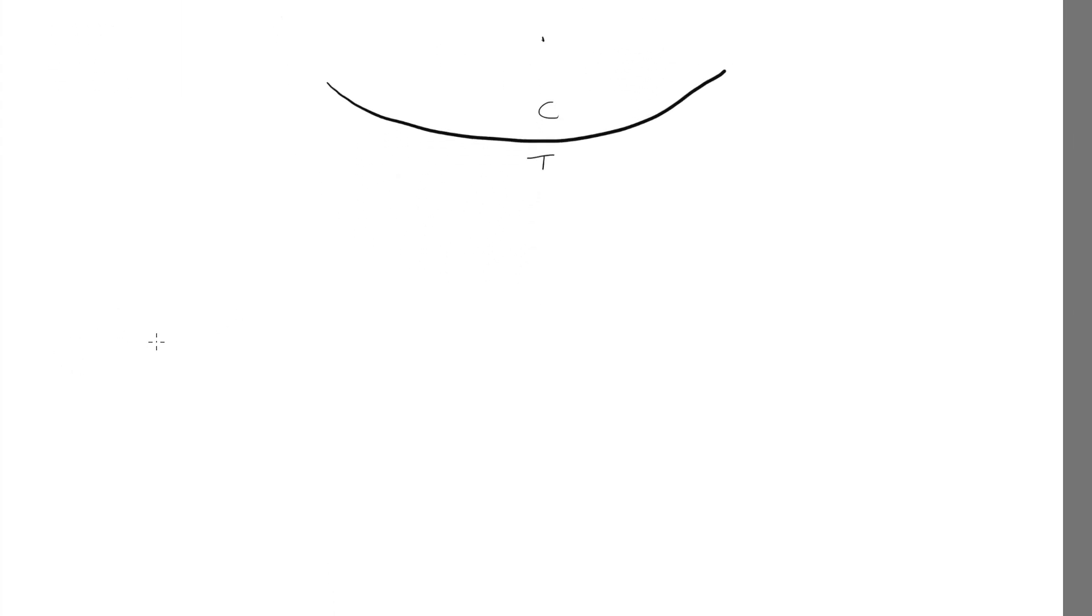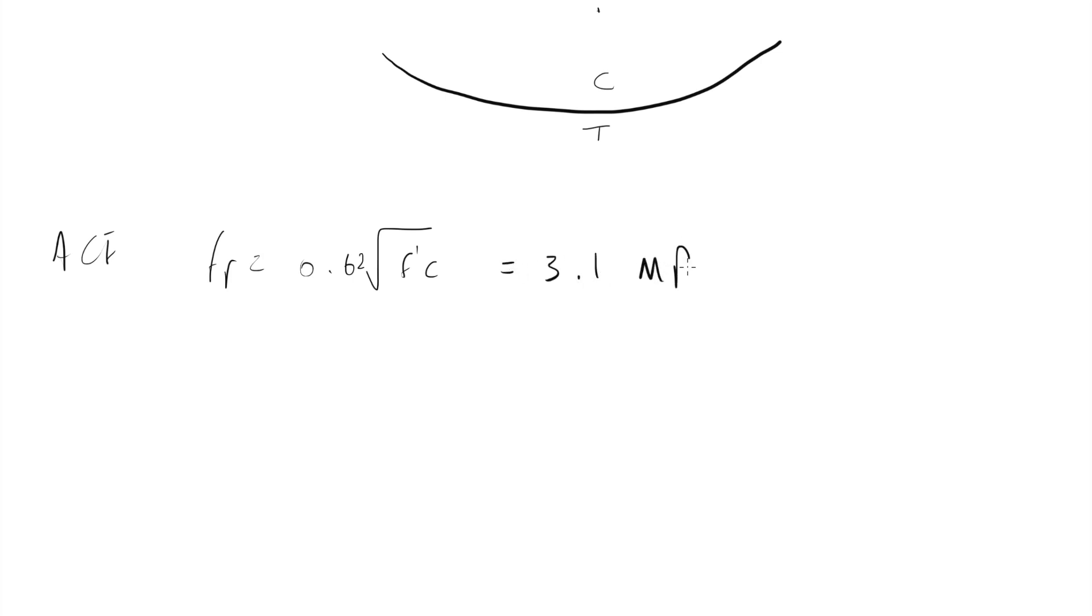So we can use two approaches of ACI code and Eurocode. ACI code gives the modulus of rupture or tensile strength of concrete in bending as 0.62 square root of F prime C. This gives 3.1 megapascal.